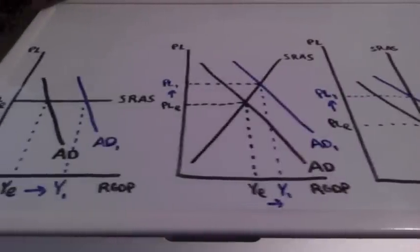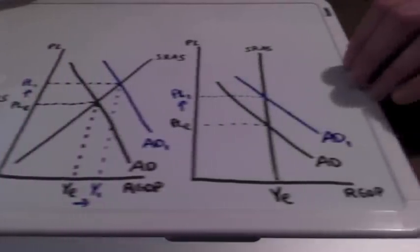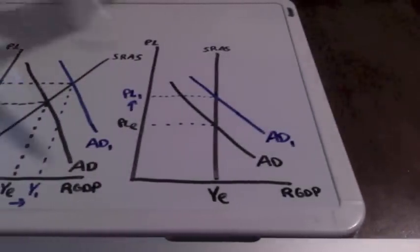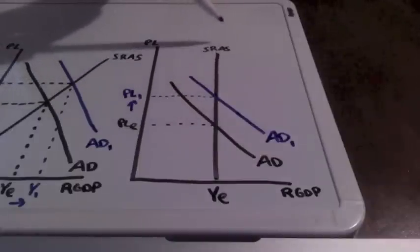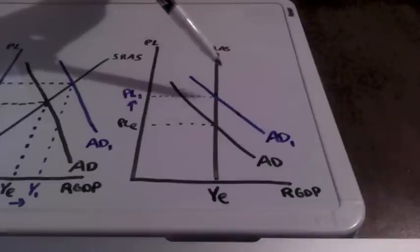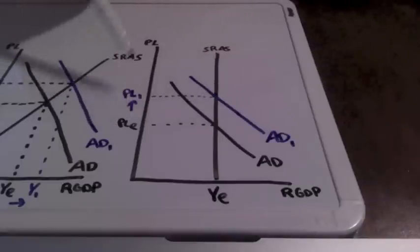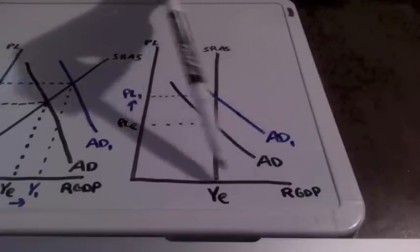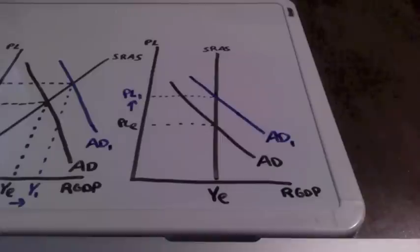For our perfectly inelastic short run aggregate supply curve, when we have an increase in aggregate demand our price level is going to increase but our real GDP is going to remain constant.